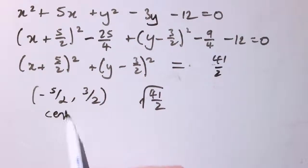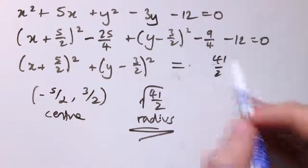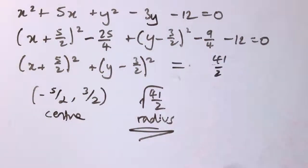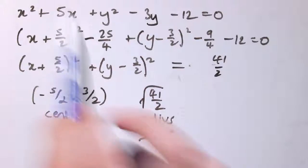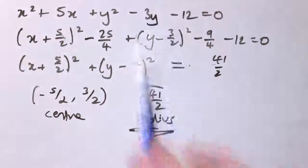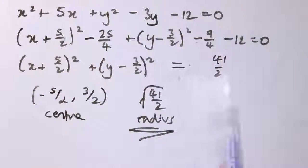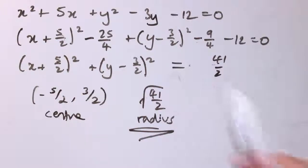You could work that out as a decimal if needed, but I'll leave it like that. Remember, if this number comes out negative, then it's not a circle. That's our basic technique: get everything to the left-hand side, look at the x squared and x terms and complete the square, look at the y squared and y terms and complete the square, and sort out what you've got. If it's a circle, you'll find its centre and radius from the standard form; if the result is negative, it's not a circle.